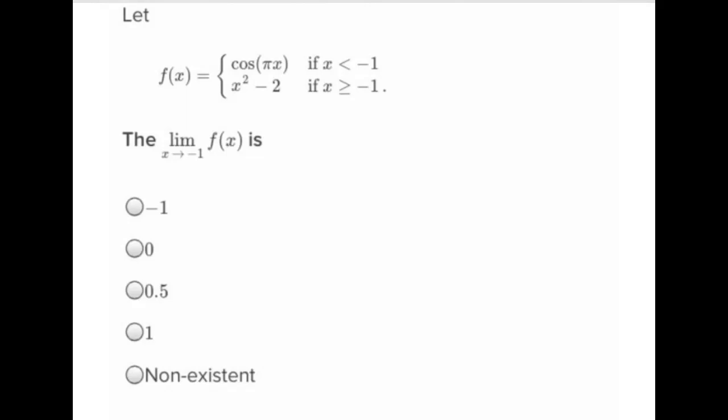Okay. Let f of x be that. What's the limit as x approaches negative 1? Oh, it's a two-sided limit. Okay, so it's approached from the left side and the right side.